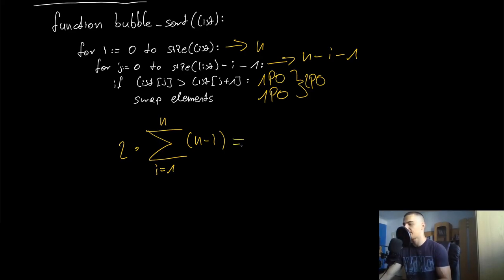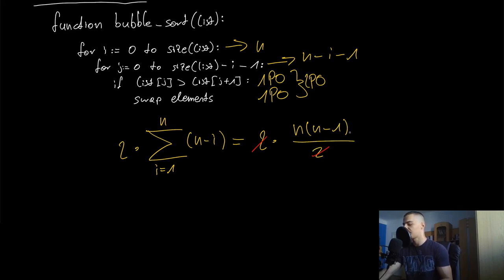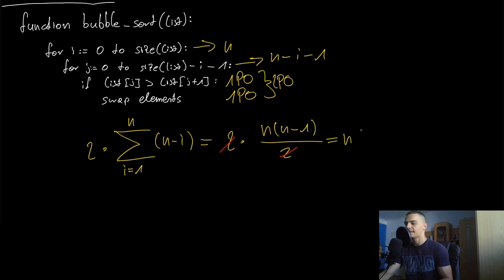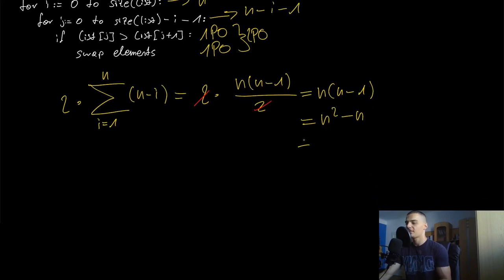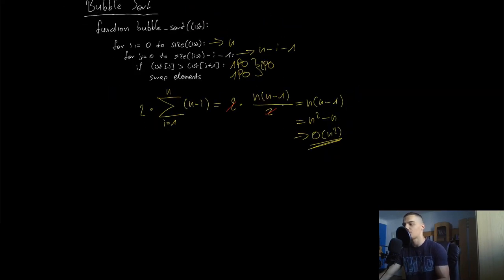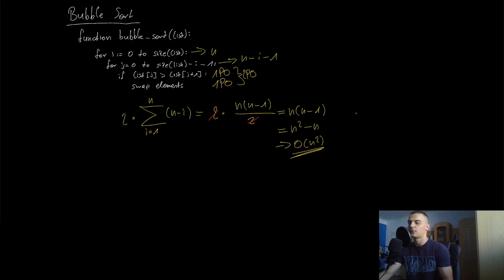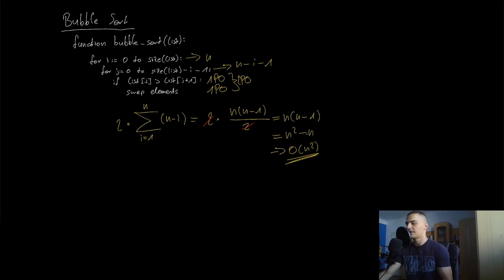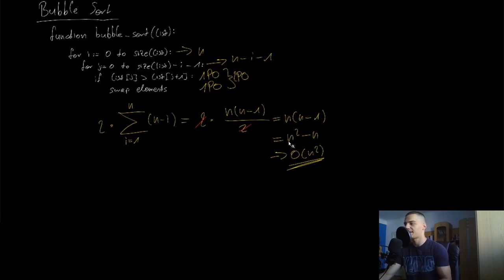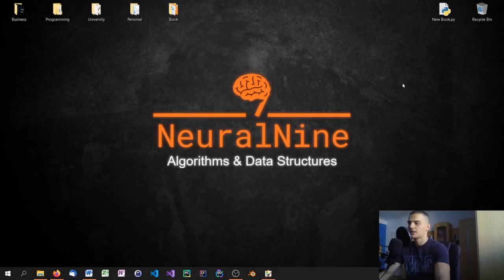We have a factor of two in front, so we get two times n times (n minus one) divided by two — the twos cancel. We're left with n times (n minus one), which expands to n squared minus n. In Big O notation, this is O(n²). We use Big O rather than theta because we're focused on the worst case runtime complexity.